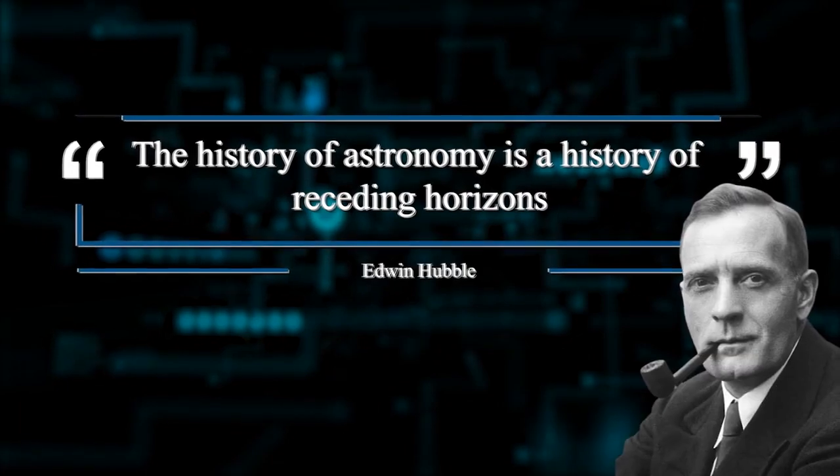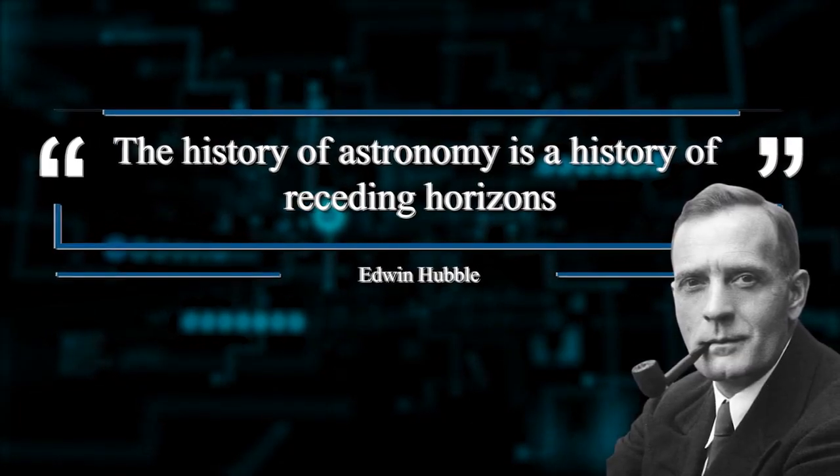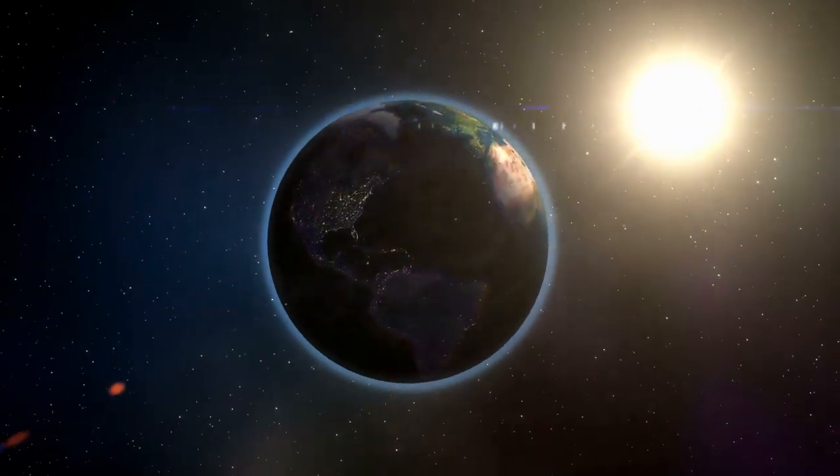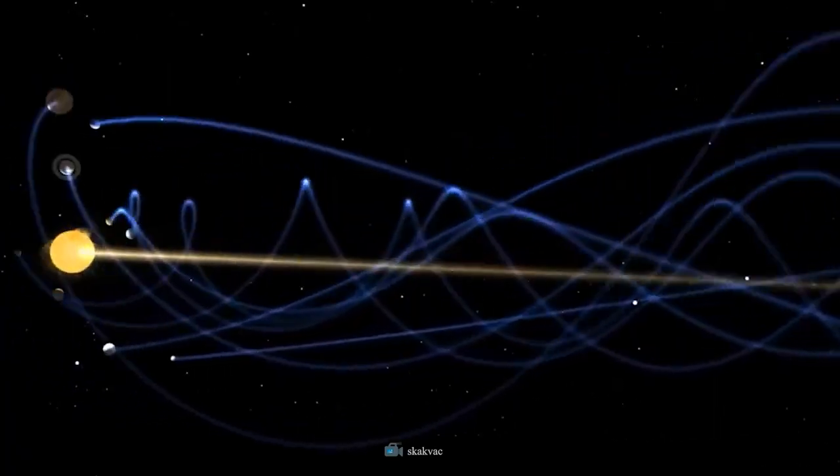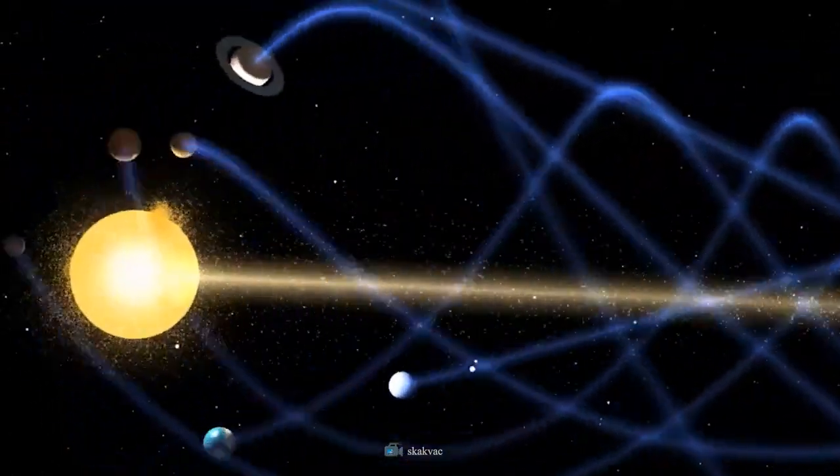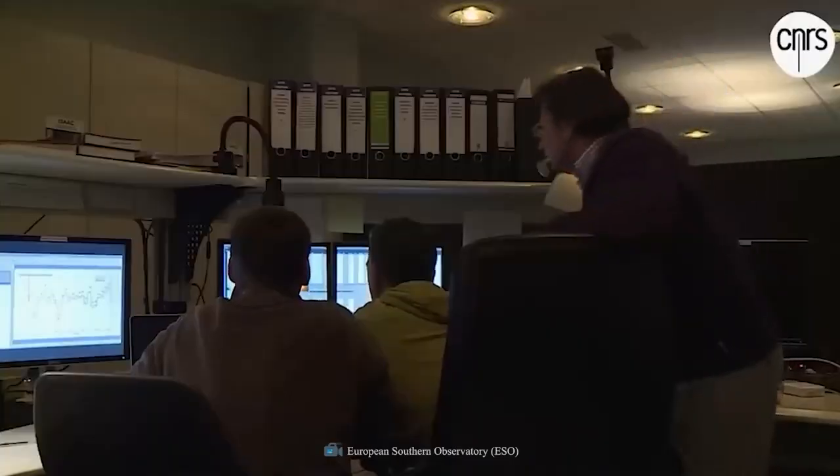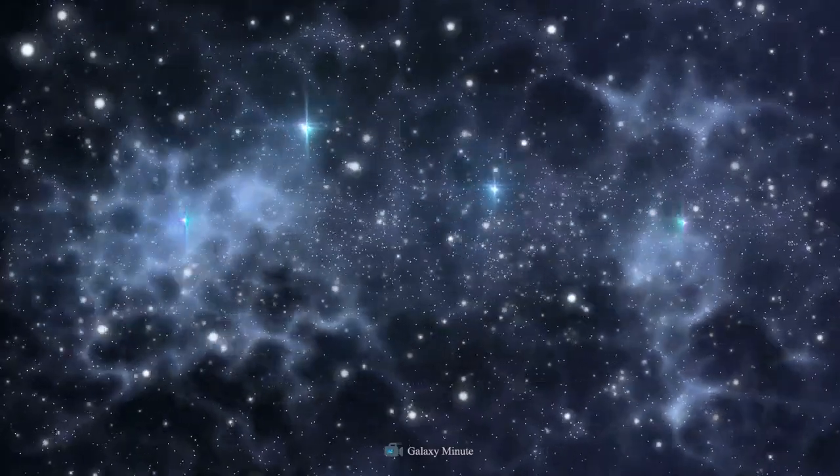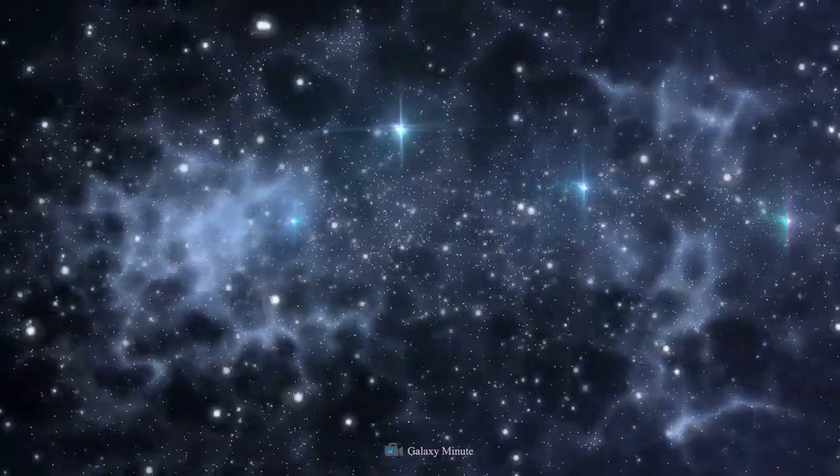The history of astronomy is a history of receding horizons. Edwin Hubble. In the past, astronomers believed that the Earth was literally the center of the universe, and that there was only one solar system, our own. In the same way, scientists today refuse to consider any other possibility and think that our universe is the only one that exists. But it won't be long before we find solid proof that parallel universes or other realities exist.